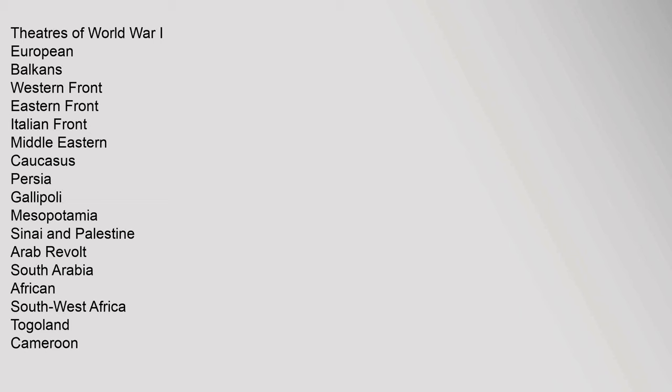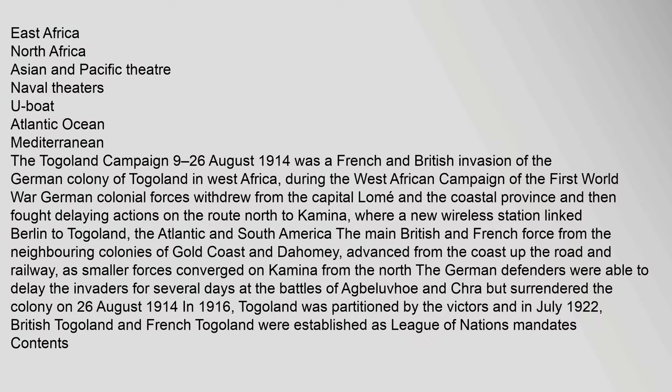Theatres of World War I: European Balkans, Western Front, Eastern Front, Italian Front, Middle Eastern, Caucasus, Persia, Gallipoli, Mesopotamia, Sinai and Palestine, Arab Revolt, South Arabia, African Southwest Africa, Togoland, Cameroon, East Africa, North Africa, Asian and Pacific Theatre, Naval Theatres, U-Boat, Atlantic Ocean, Mediterranean. The Togoland Campaign: 9–26 August 1914.